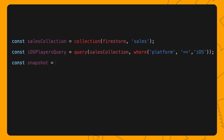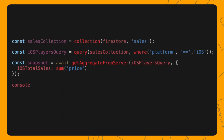Once you have this query, you can use it when calling getAggregateFromServer. The rest remains the same. Call sum, pass in the price field as a parameter, and assign a value to a variable, for example, iOSTotalSales. The last thing you need to do is call snapshot.data and access the total sum of sales made on iOS through the iOSTotalSales variable. And that's it. If you want to learn more about Firestore queries, take a look at our documentation to discover all the combinations you can make.